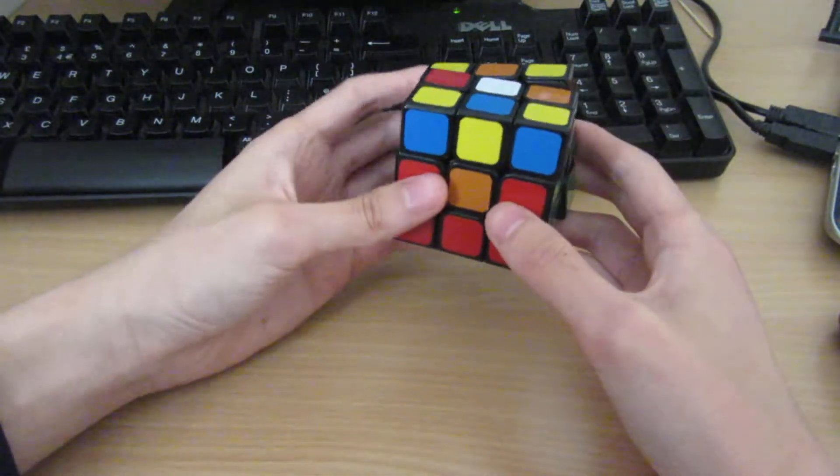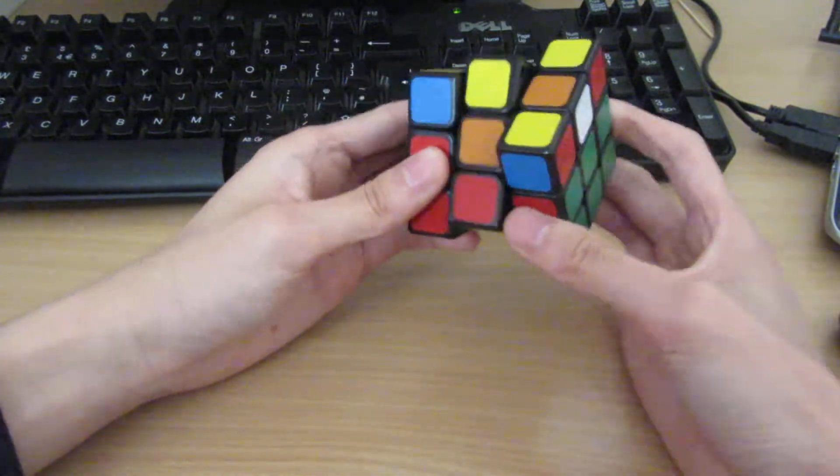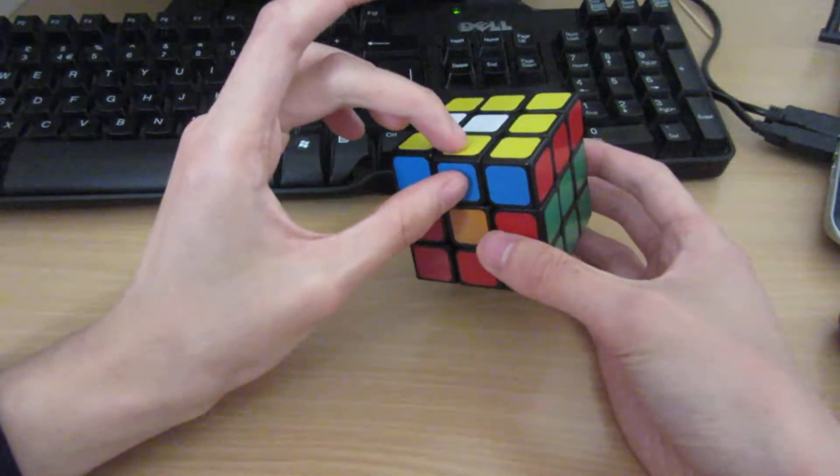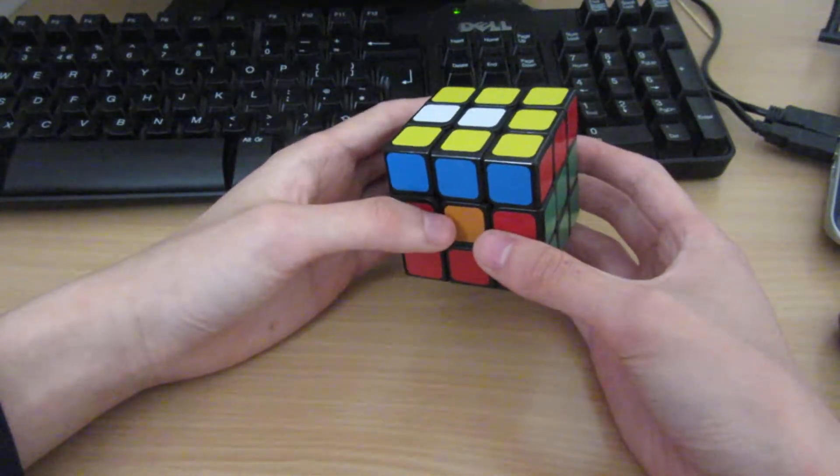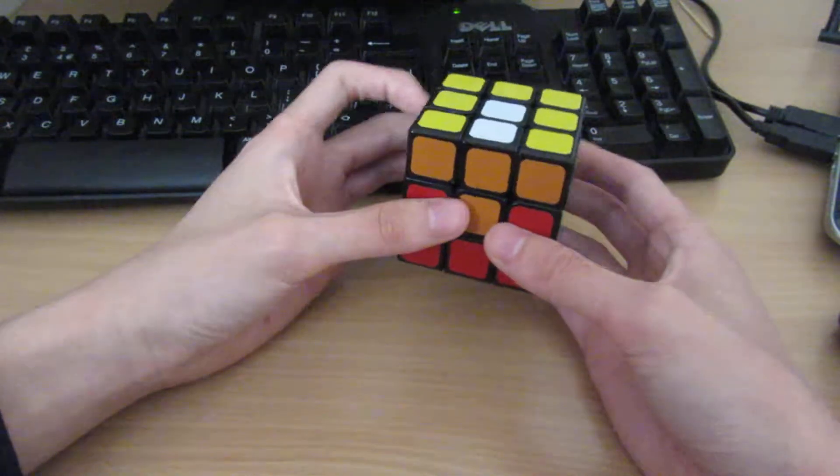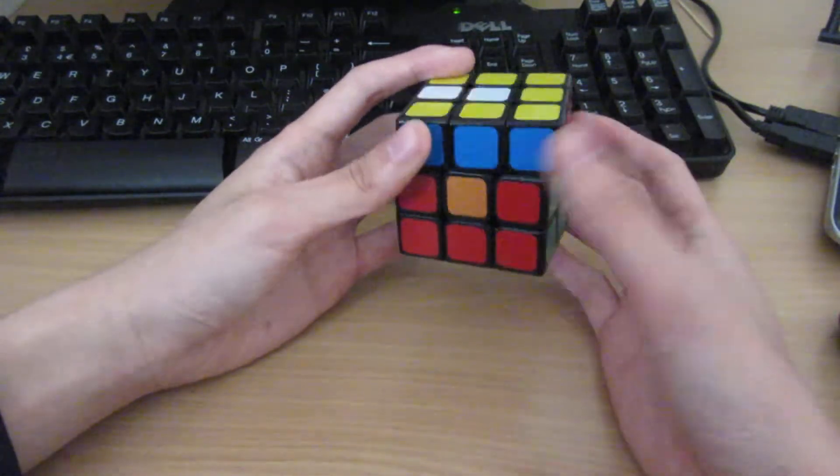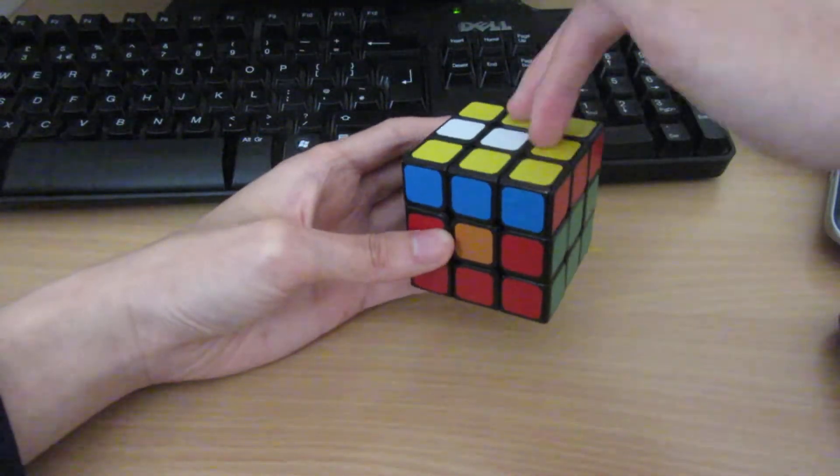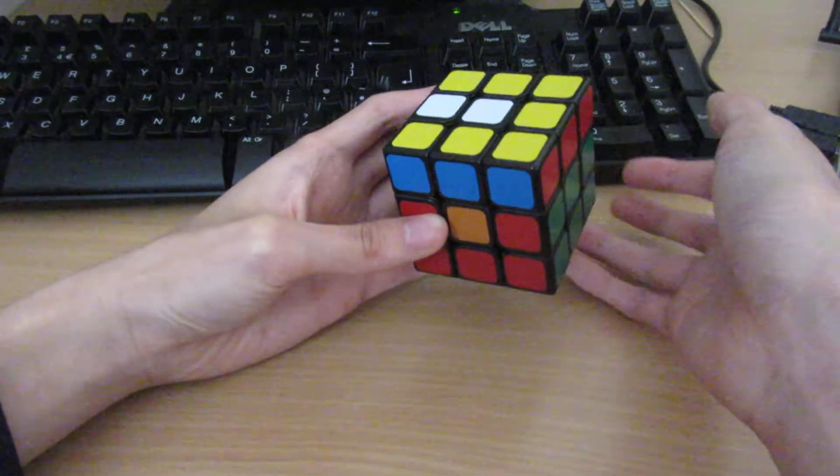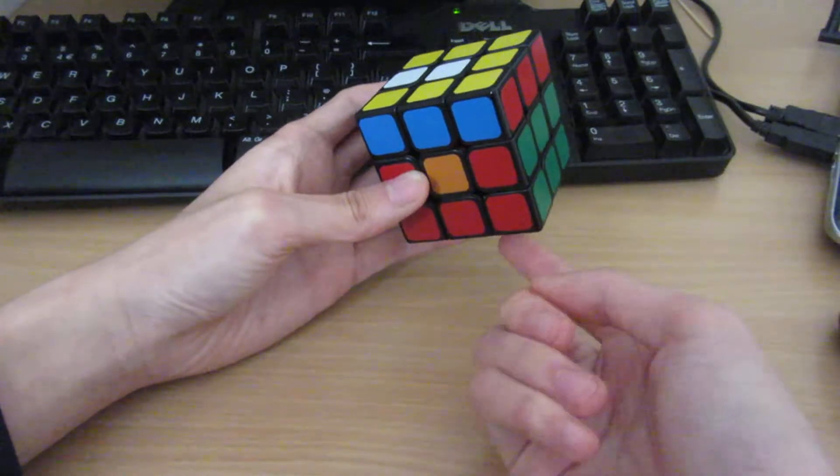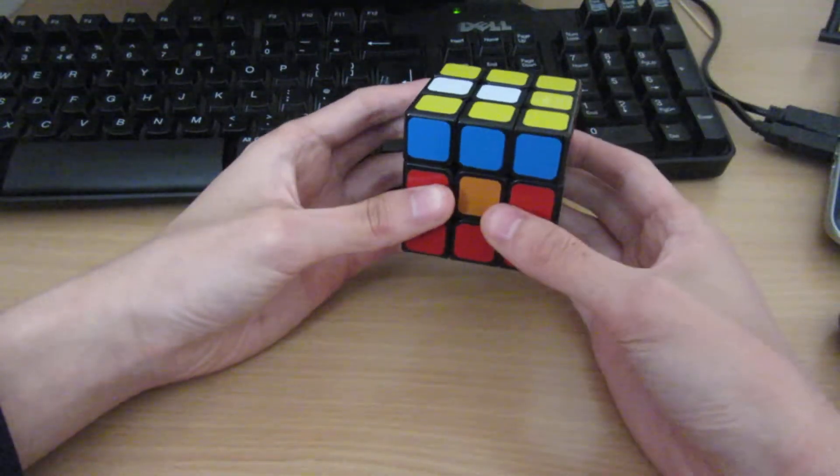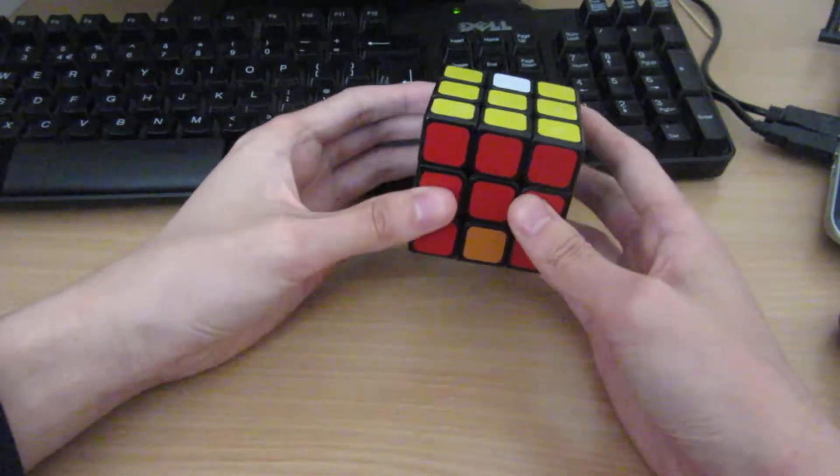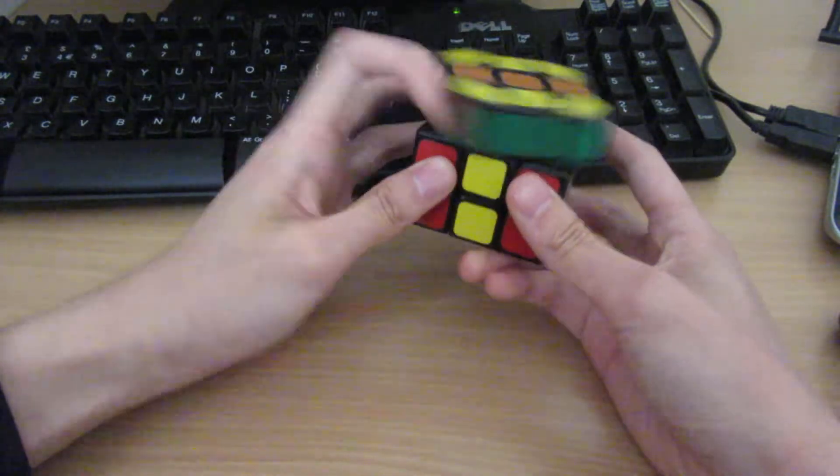CMLL. So yeah, this is EO, just a normal case. I saw this. I know what this is here. By process of elimination, I know that my green yellow edge is at the back because you can just see it anyway. Like these two are yellow, the other yellow one must be back here because this one is definitely not yellow. I just do that to fix EO and I do that for L4E.